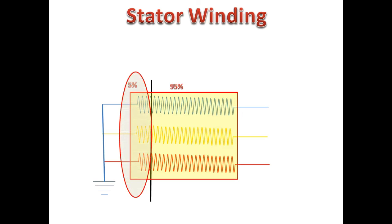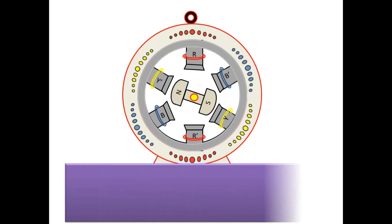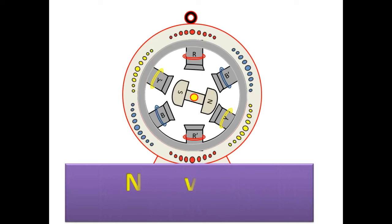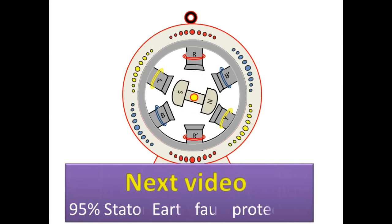For the remaining 5% of the winding, we have to find an indirect method to detect the fault. This is the introduction to stator earth fault protection. In the next video, I am going to cover the 95% stator earth fault protection in detail.